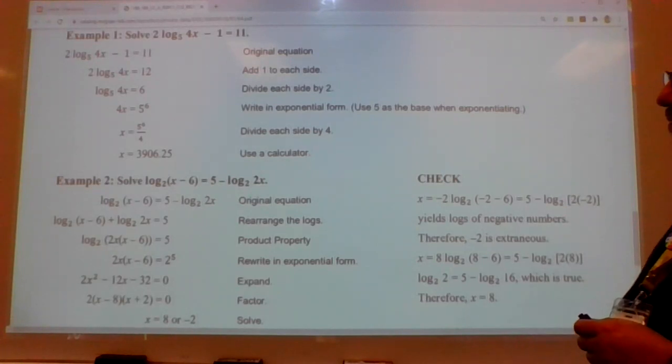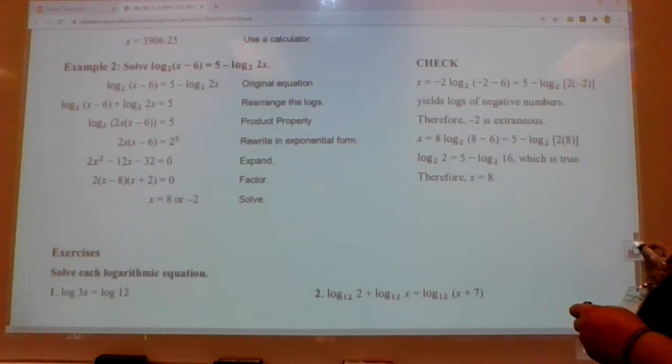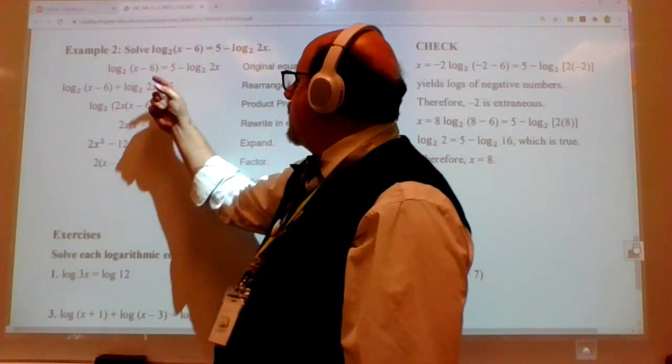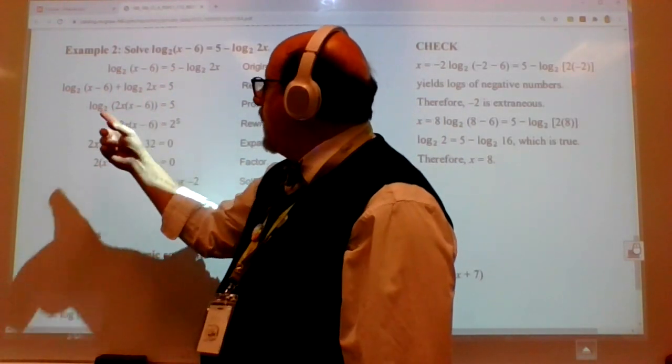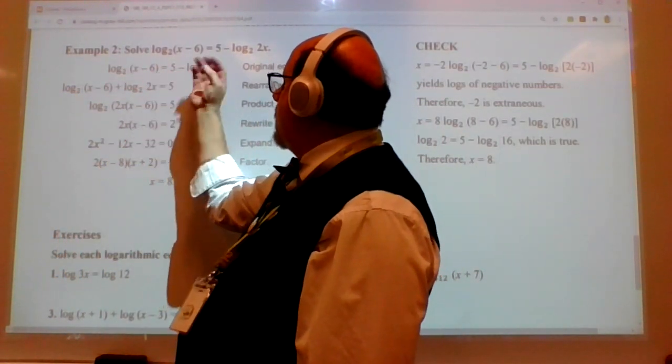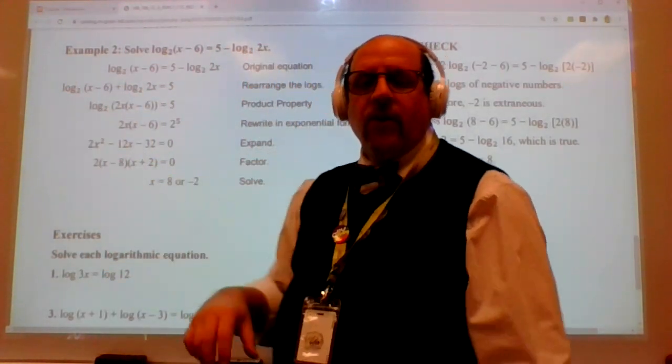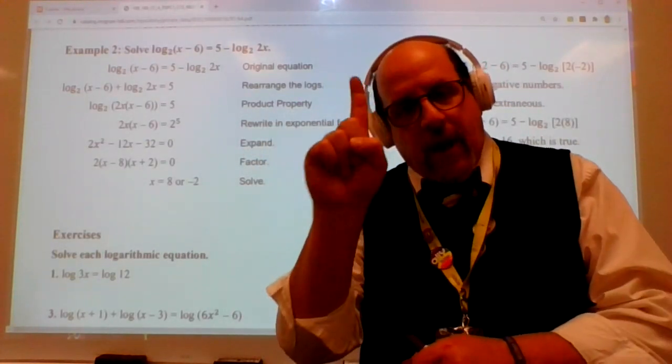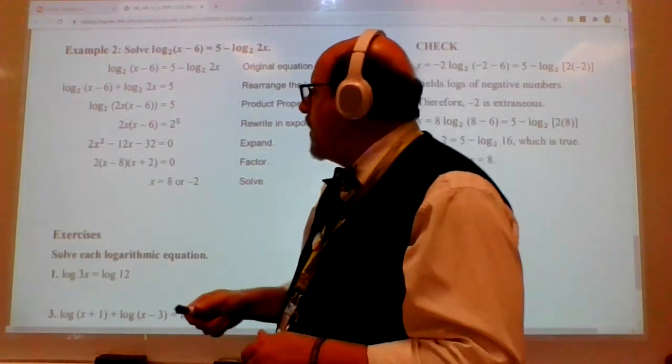The second one, not quite so easy. You have to remember the power, not the power property, but the product property. We're solving log base 2 (x minus 6) equals 5 minus log base 2 (2x). Well this should be pretty easy, right? We have log base 2 here, and we have a log base 2 on the other side. My problem is I want both my log base 2s on one side so that I can use the product or the quotient property to put them together, and then we have one log that we can change into exponential form.